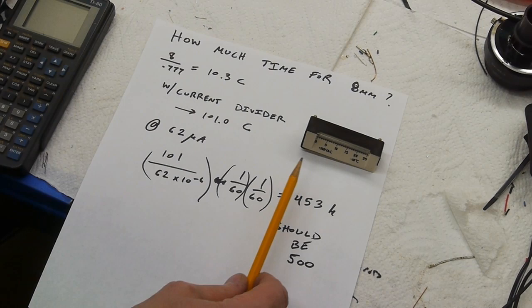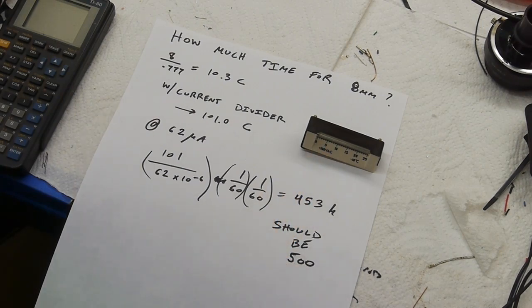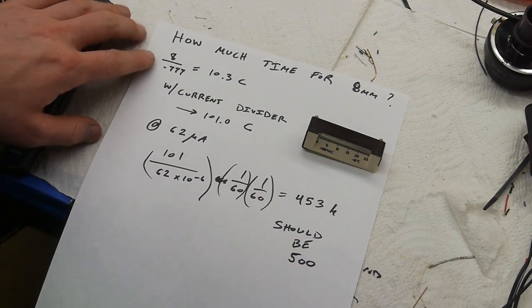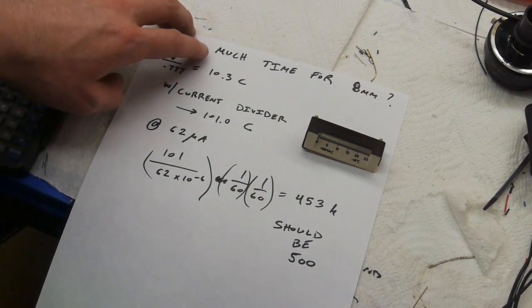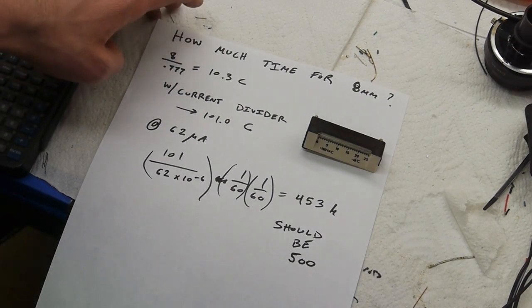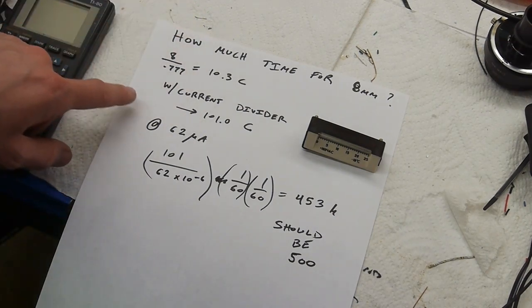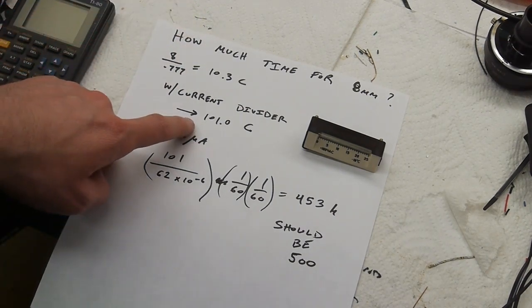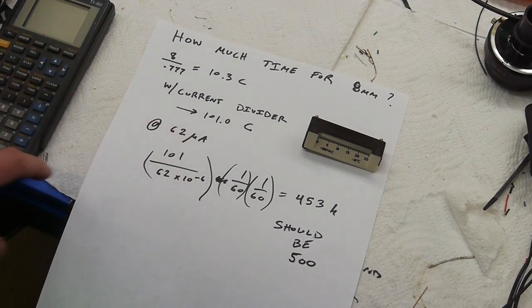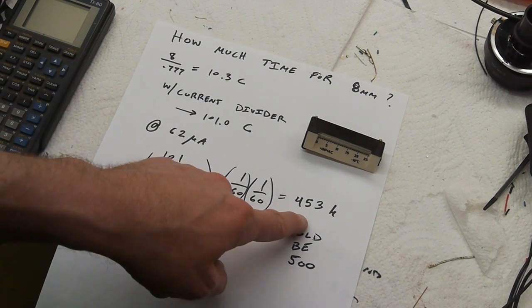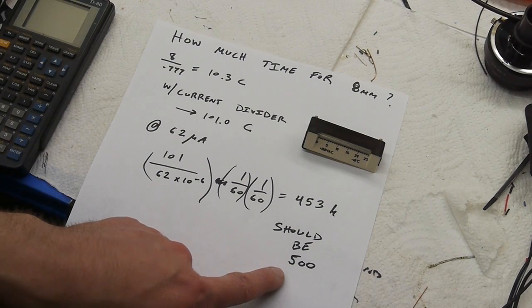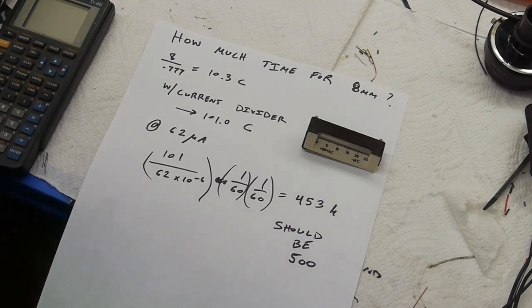So as it happens, 500 hours on this scale is exactly 8 millimeters, and so I did 8 divided by that rate that we just came up with, and came up with 10.3 coulombs. But that's 10.3 coulombs through the capillary. If we use that 10 to 1 current divider, that's actually 101 coulombs of total charge. And this thing is drawing about 62 microamps. So if we calculate it all out, we get 453 hours calculated when it really should be 500.